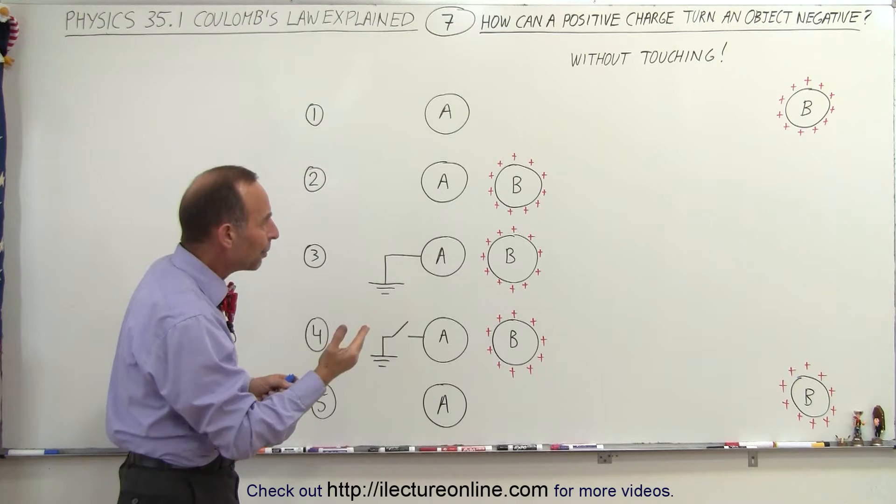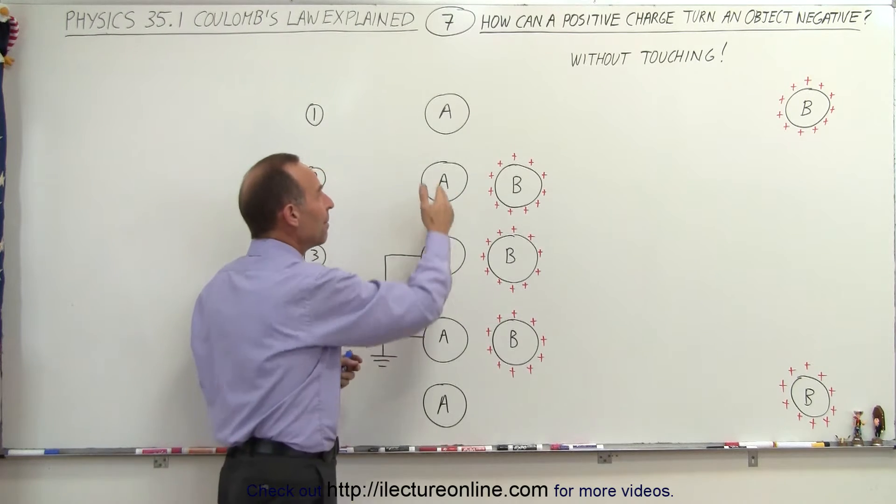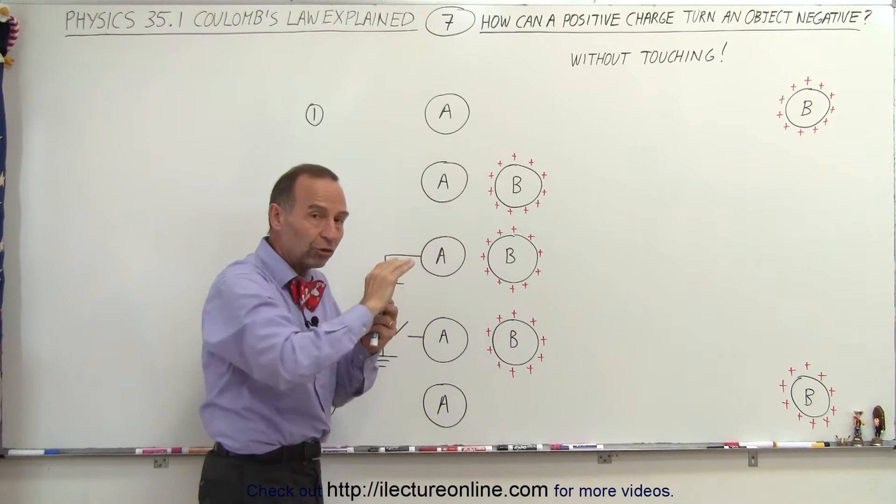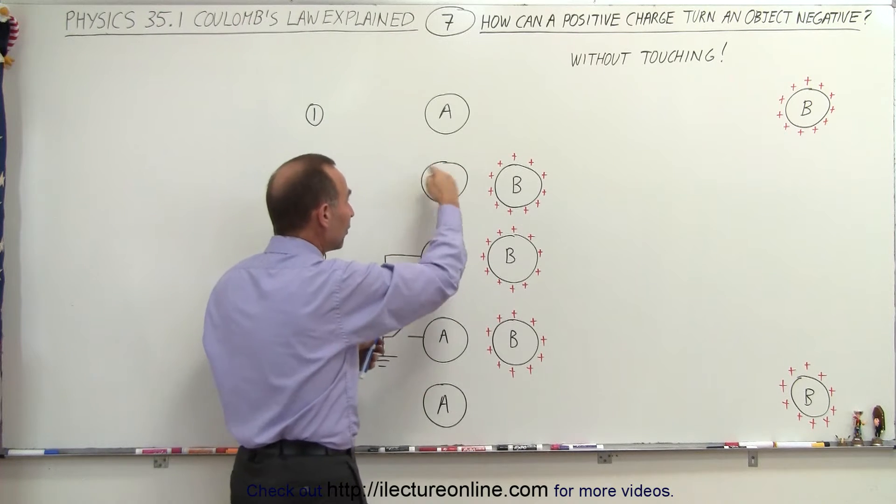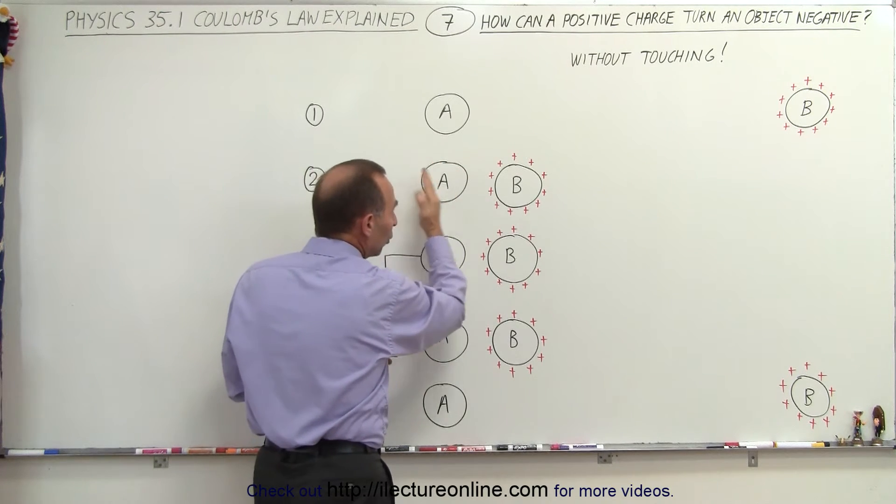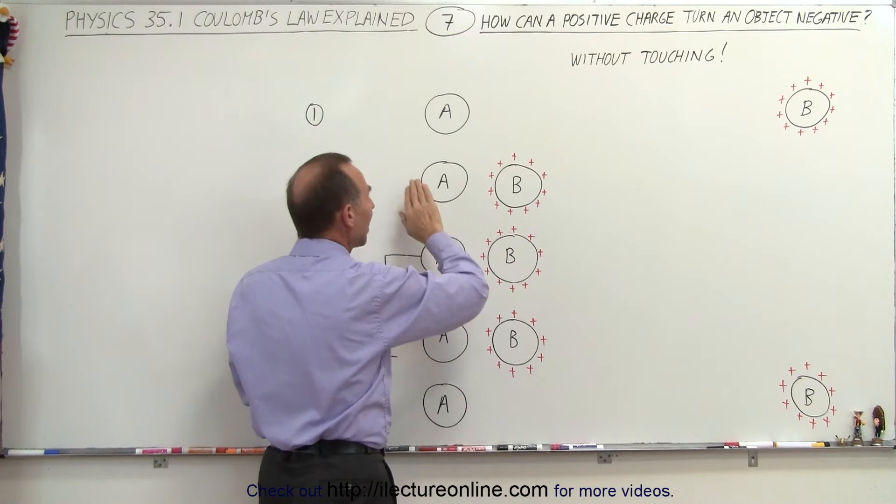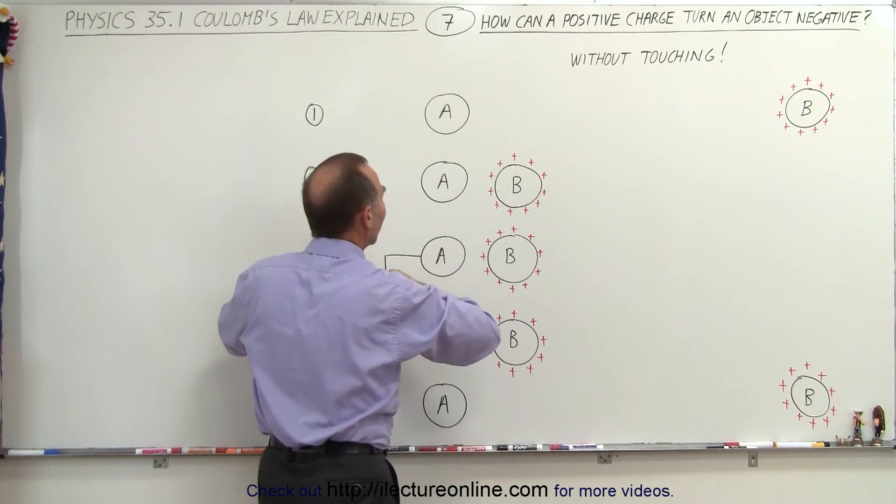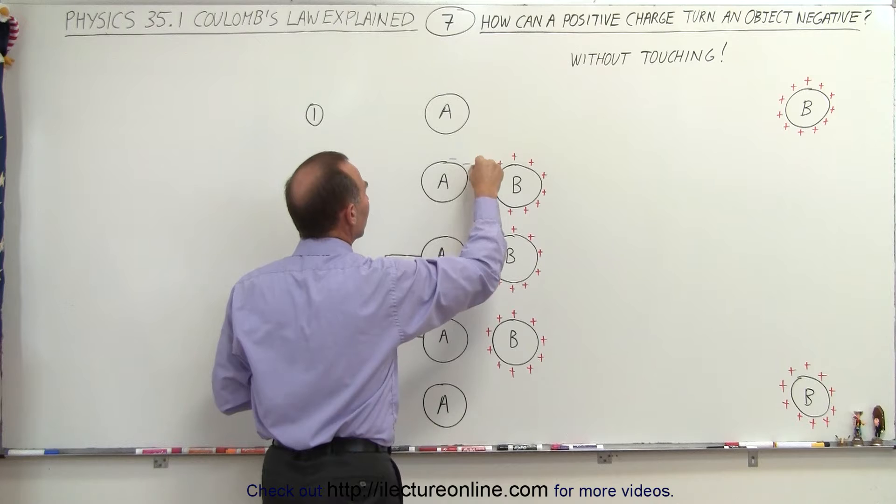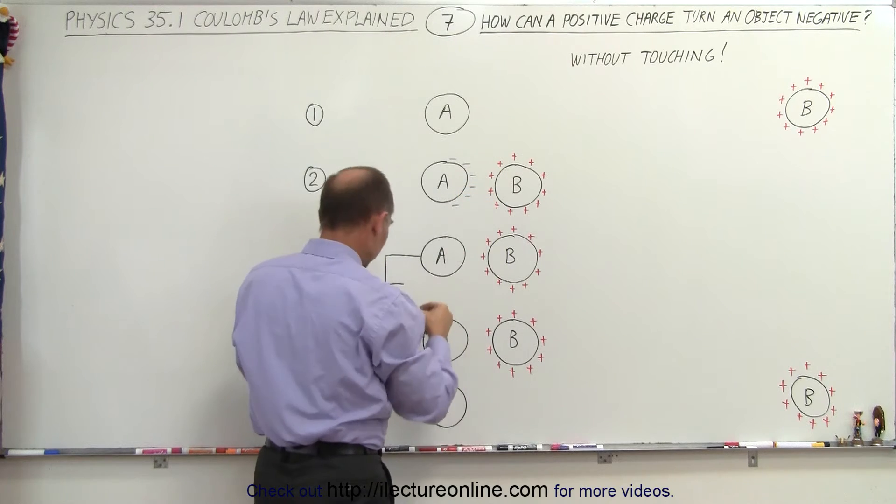But what will happen by bringing the two close together is that the negative charges, which at first are evenly distributed in sphere A, they will be pulled towards the positive charges on B, and you'll have an excess charge on the side of A that is closer to B. So this side will become more negatively charged,